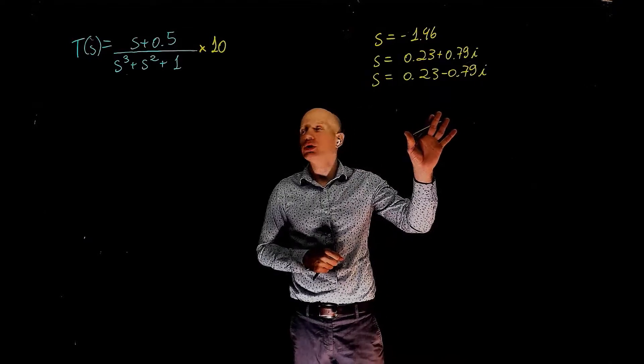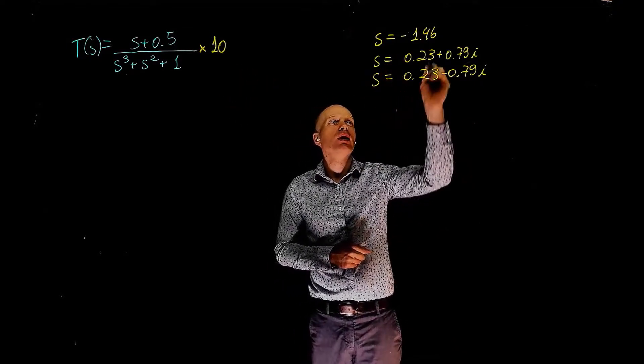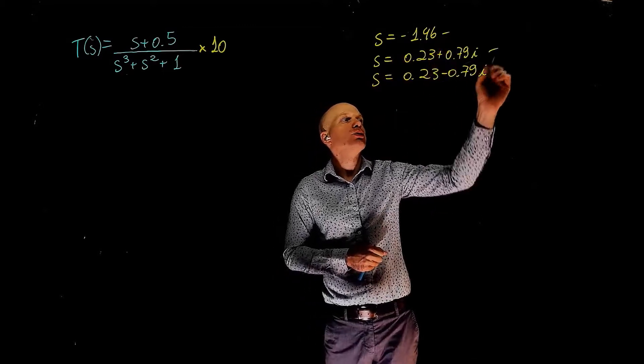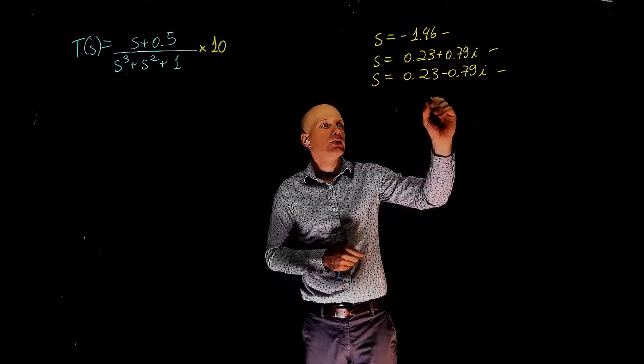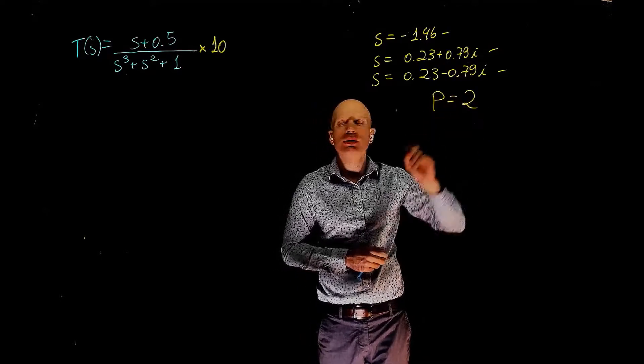The poles of the transfer function are the same. We simply multiply this by a gain. We still have three poles, a stable pole and two unstable poles. So the number of unstable poles of the open loop transfer function is 2.